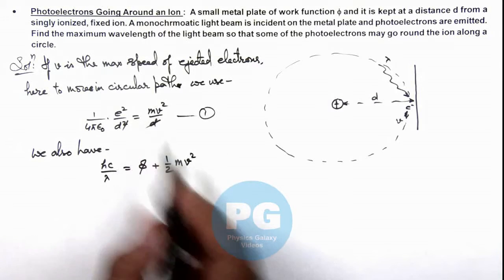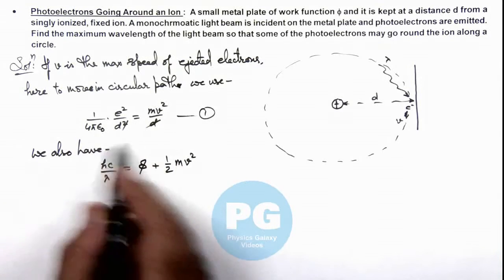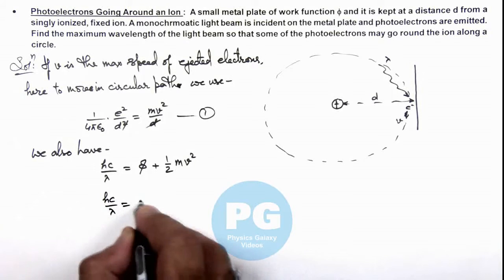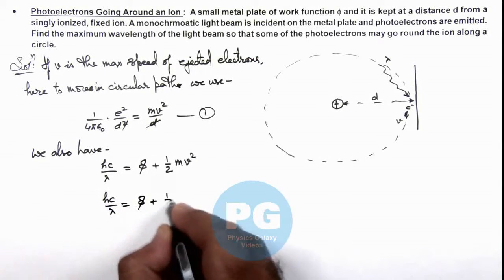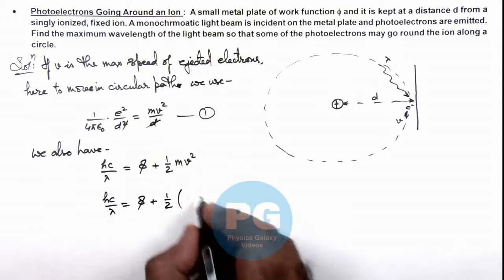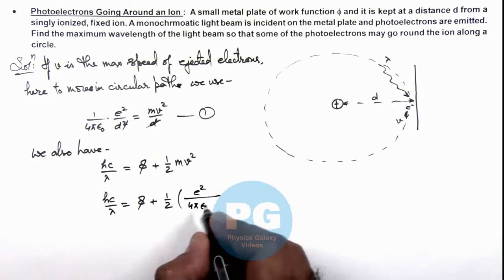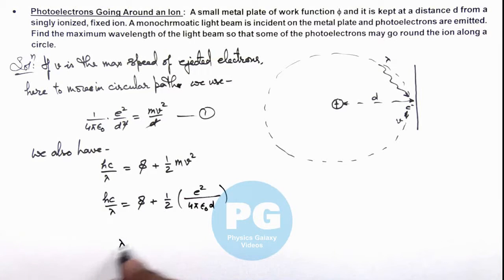And we can substitute the value of m v square from this expression, which gives h c by lambda is equal to phi plus half, and m v square here can be written as e square by 4 pi epsilon not d. And on simplifying this we get the value of lambda.